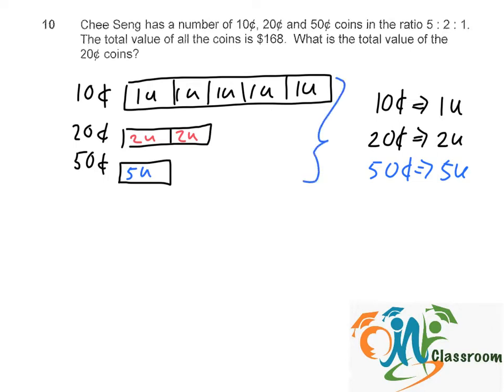So in total, the amount of the coins add up to $168. So if you were to count the number of units: 1, 2, 3, 4, 5, 6, 7, 8, 9, plus 5, we have a total of 14 units.